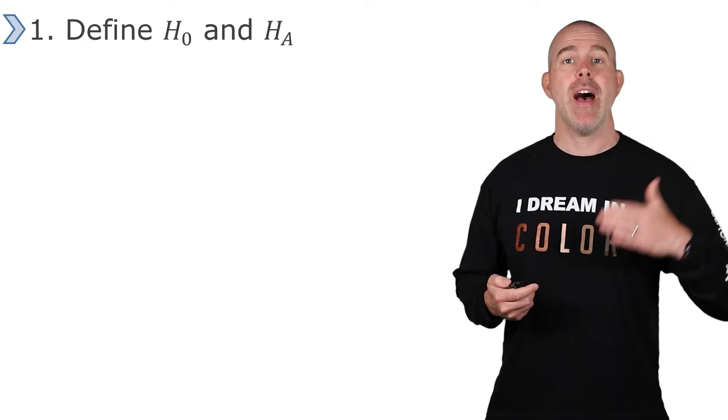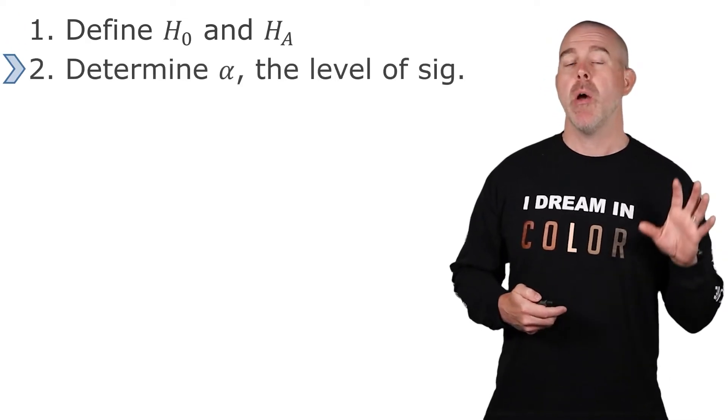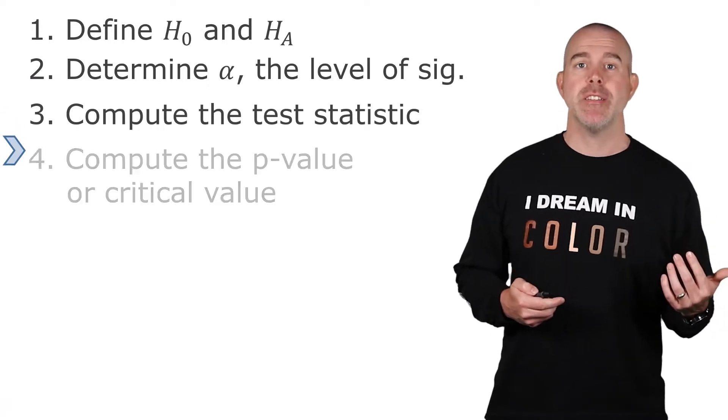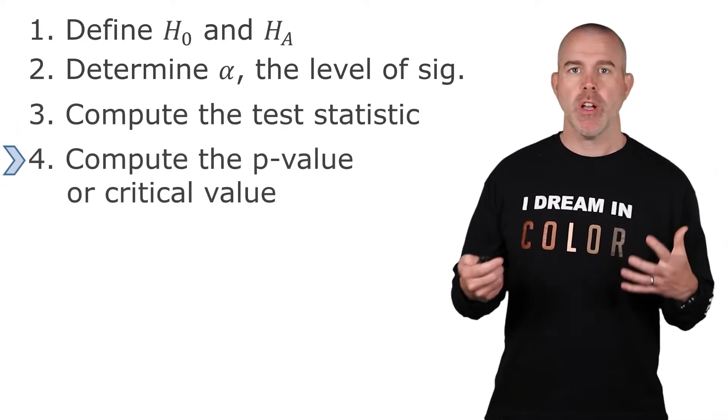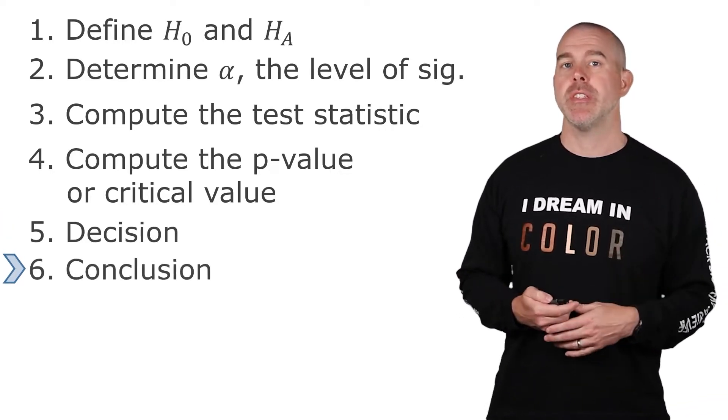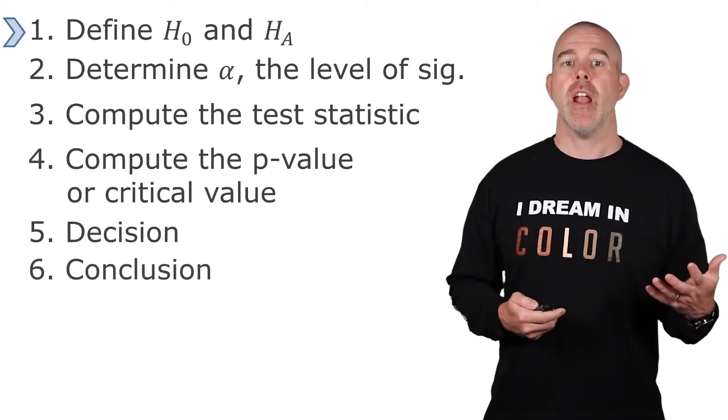Let's go through our hypothesis testing process. We want to define a null and alternative hypothesis. We want to determine a level of significance, that's the alpha computed test statistic, get the p-value or the critical value, depending on the method. We want to make a decision to reject or not reject, and then we will state a conclusion. So let's look at ours.